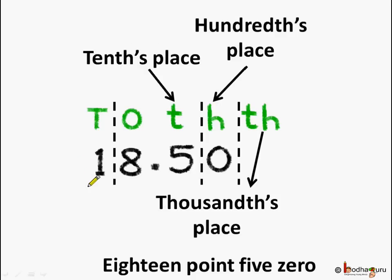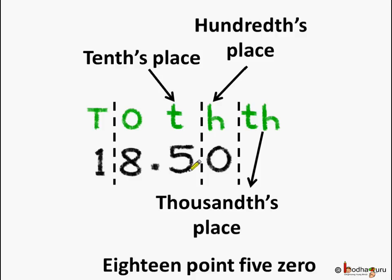Now, if we see the place value of each digit, then 1 is at the tens place and 8 is at the ones place. After the decimal point we have the tenth place, which is 1 by 10. Next comes the hundredth place, which is 1 by 100, and this is followed by the thousandths place, which is 1 by 1000. So after the decimal point, the place value decreases by 10 times as we go towards the right.